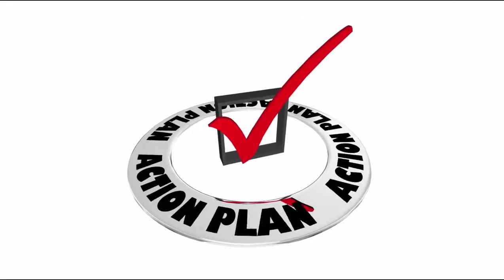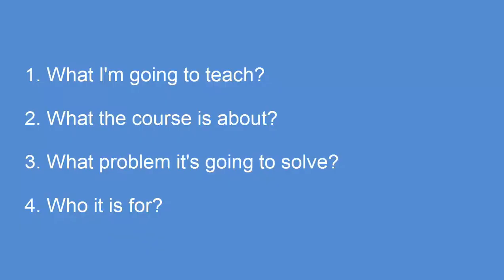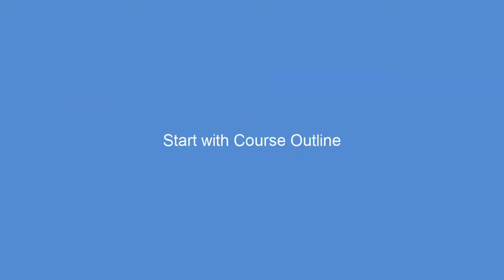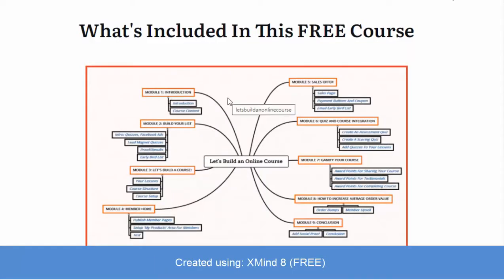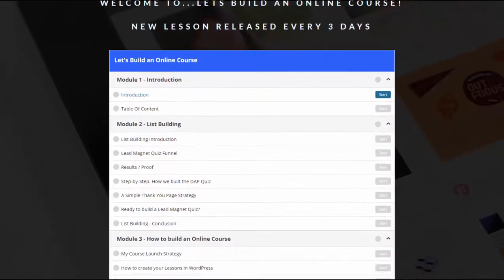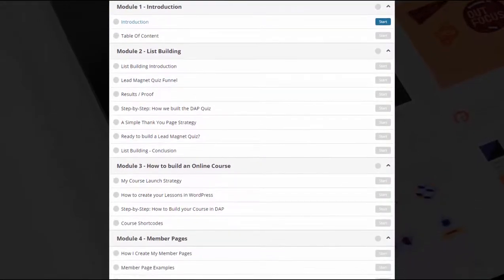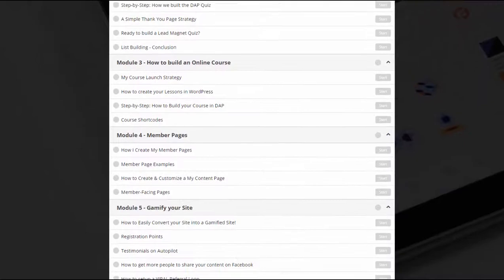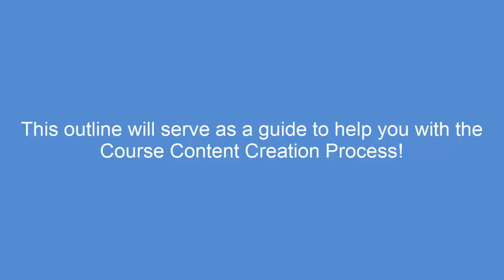Say that I have already validated my idea, I'm clear about what I want to teach, and I know the problem that I want to solve with my course — here are the steps I follow. Number one, I create a course outline. An online course outline is made up of modules and lessons to help students go from where they are to where they want to go. When you are in the course content creation mode, you don't have to think about what's next. You have already done that. It just reduces the overwhelm because you know exactly what's next, and now you just have to build it based on the plan.